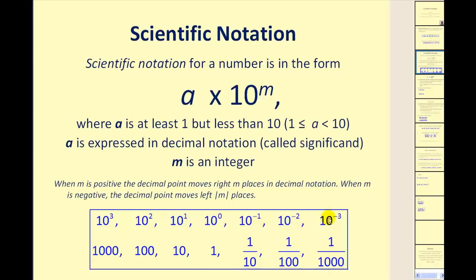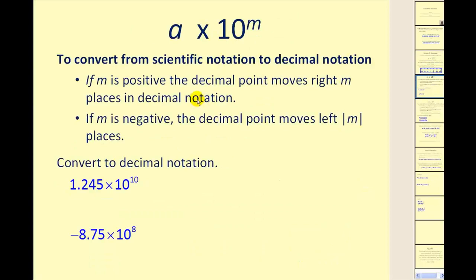If we're multiplying by a negative power of 10, we would multiply a by some fraction, and if we multiply a by a number that's less than one, the result will be less than a. That's important when converting from scientific notation to decimal notation — we want to understand why we move the decimal point either left or right. If m is positive, the decimal point moves right m places, making the number larger than a. If m is negative, the decimal point moves left the absolute value of m places.